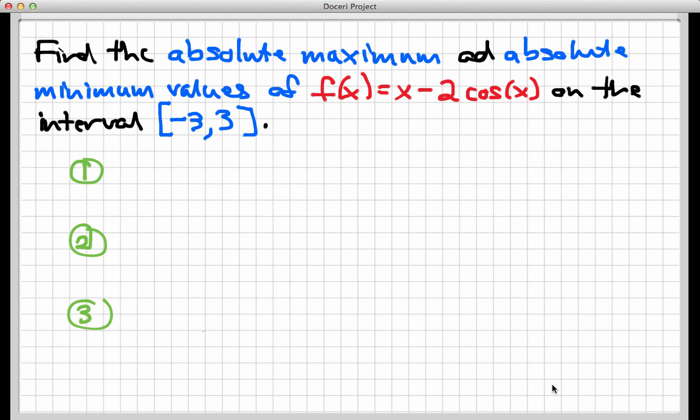First of all, note that the extreme value theorem does actually tell us that we must have absolute maximum and absolute minimum values for this function on this interval. The function f(x) is continuous because it's x minus 2 cosine x, and we're just simply adding and subtracting continuous functions from each other. And we are on a closed interval that starts at -3, ends at 3, and includes its endpoints. We don't always get absolute extreme values on any given function. However, if the function's continuous and on a closed interval, we have to. That's what the extreme value theorem says.